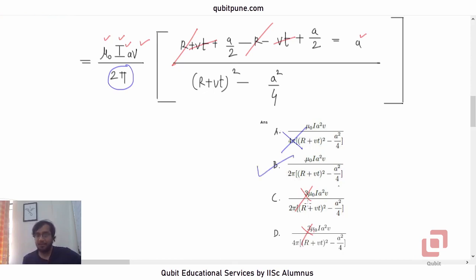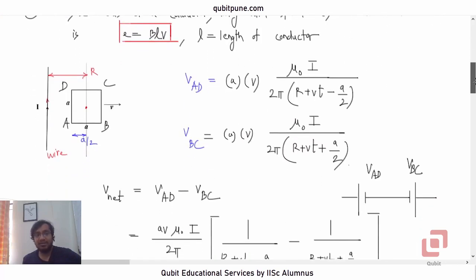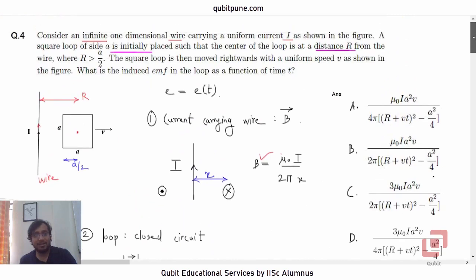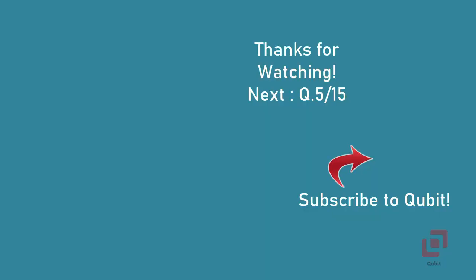Now, you might ask, why did we not consider the potential difference across C and D. I will leave that question to you. You can comment your answer in the comment section below. So, we have solved the question number 4. Let us now go to question number 5 in the next video. See you later.